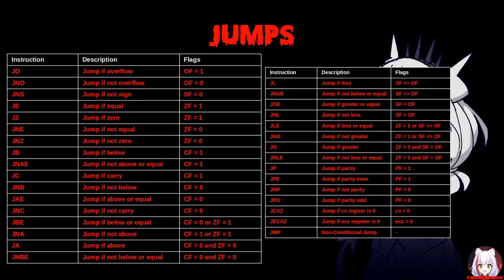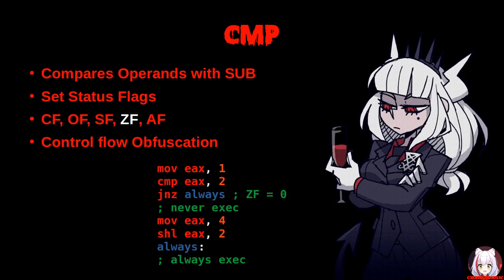Now let's talk about jump instructions. Jumps are used for both conditional and unconditional changes in control flow. Other instructions manipulate the flag registers, and then the jump instructions read the flag registers to determine if a jump is taken or not. We covered the flags in video 35, entitled Malware Theory: CPU Registers and Flags.